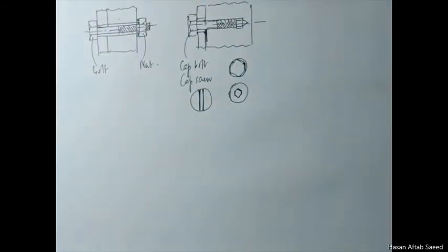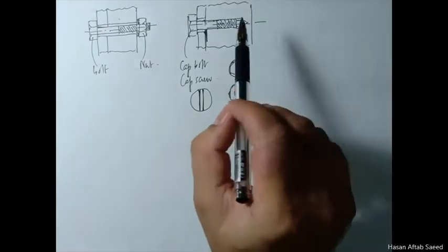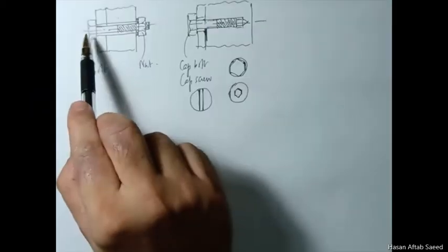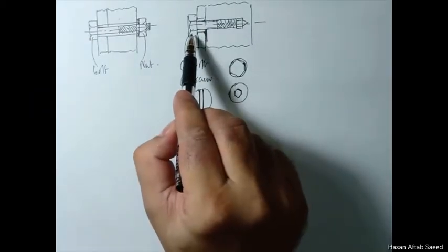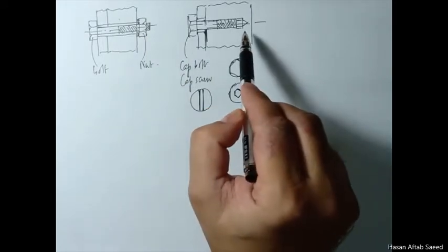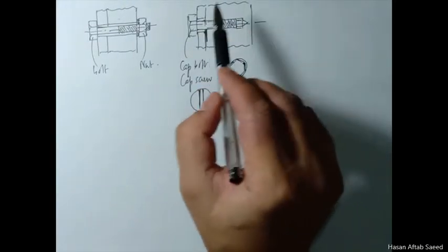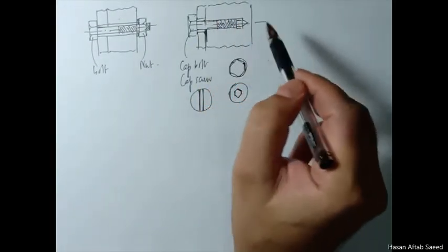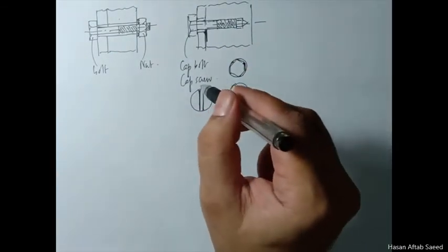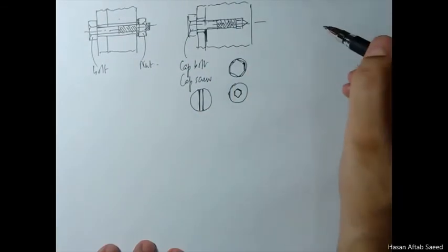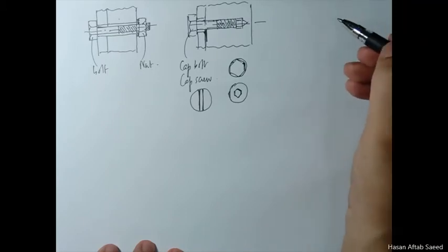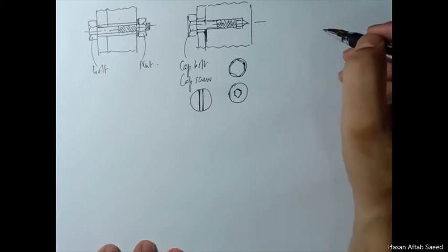Then there's the stud. The stud doesn't have a head — the bolt and cap screw both have heads. The cap screw is used without a nut, although it can be used with a nut too, in which case it effectively becomes a bolt.